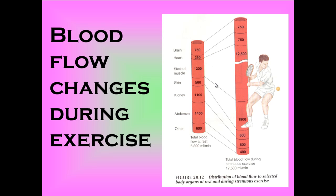This diagram illustrates the difference between the blood flow changes during exercise. So this is at rest, and this is your value for exercise. You can see straight away that the amount of blood going to different areas has increased massively — nearly trebled, from 5,800 millilitres per minute to nearly 18,000 millilitres per minute.